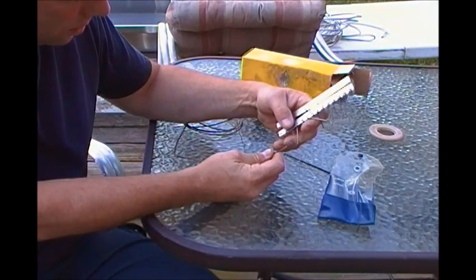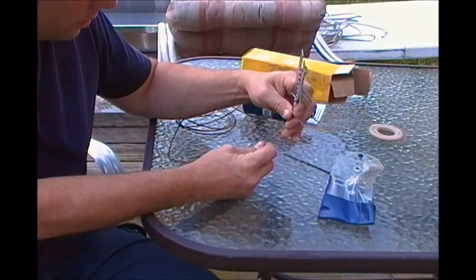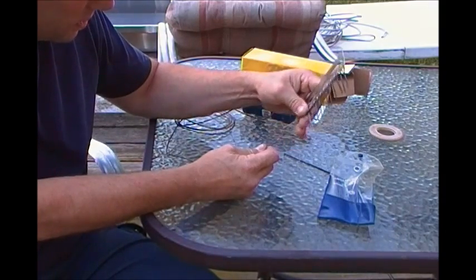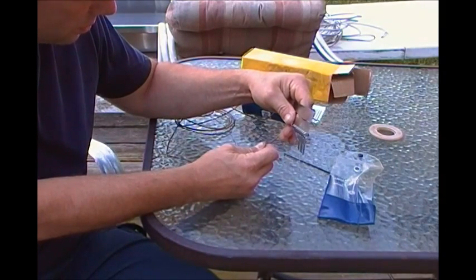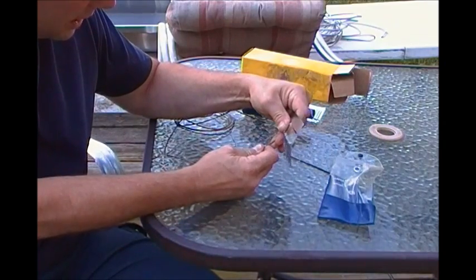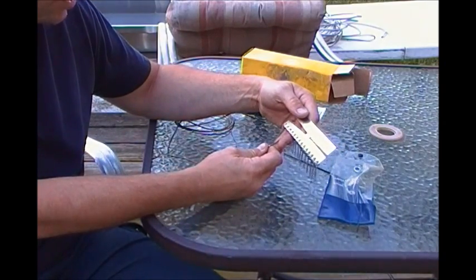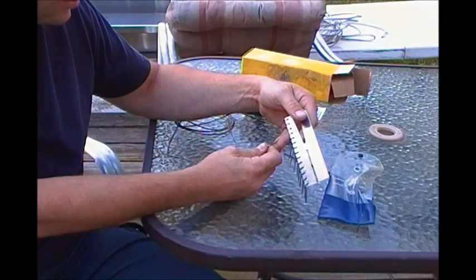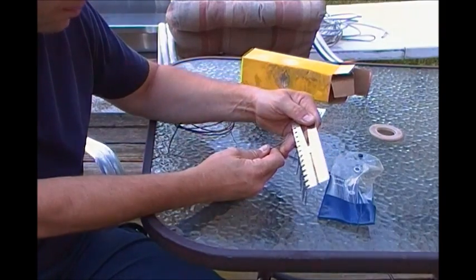So basically we're going to try this one, it fits but it's a little loose. Next one, fits, I think that's it. So it's a .036, that's the inside diameter of this capillary tube.